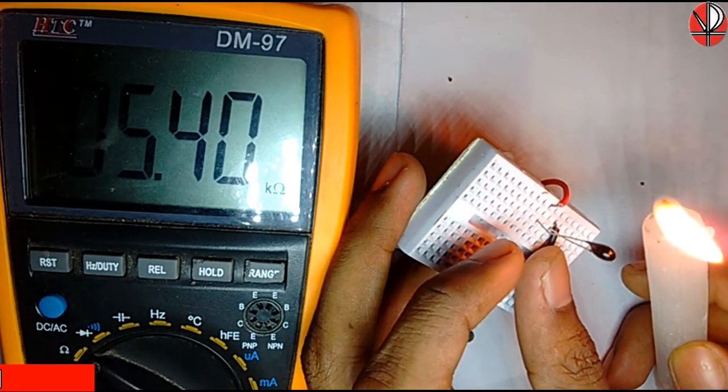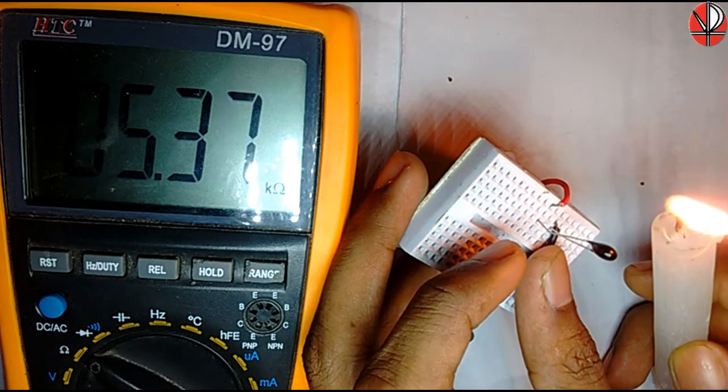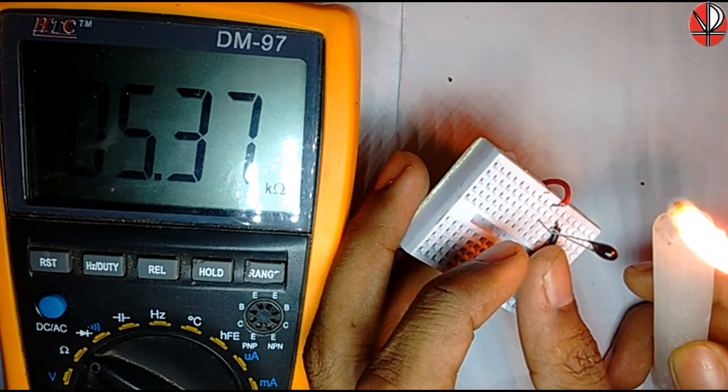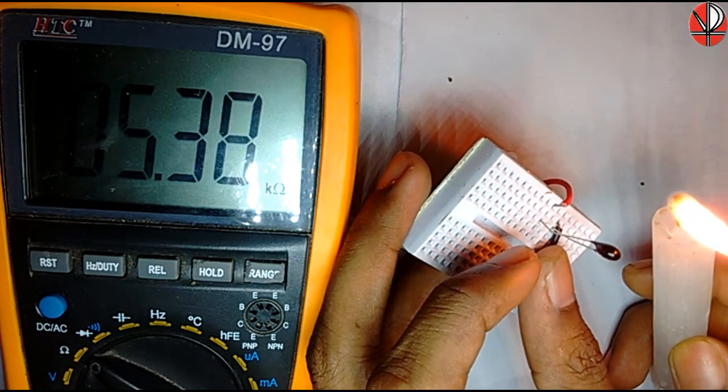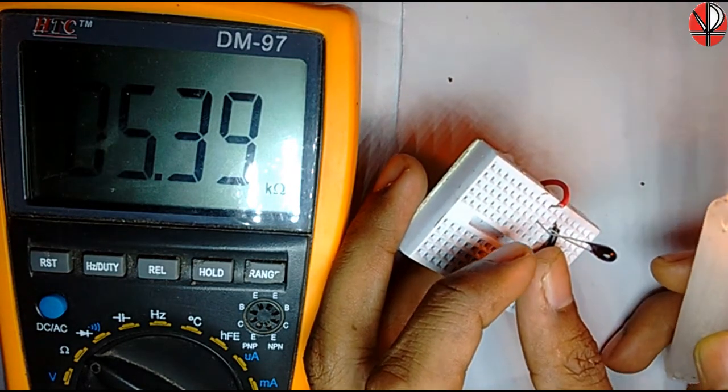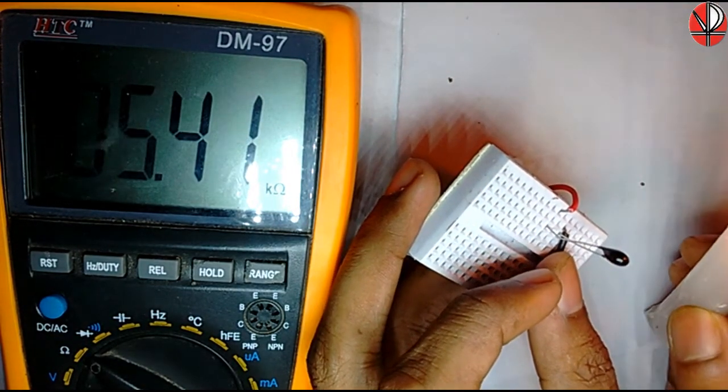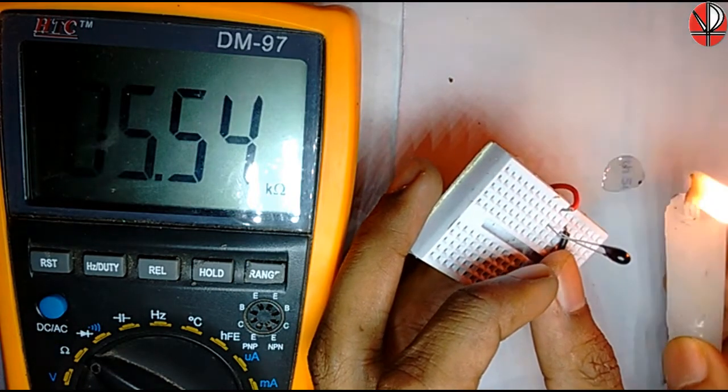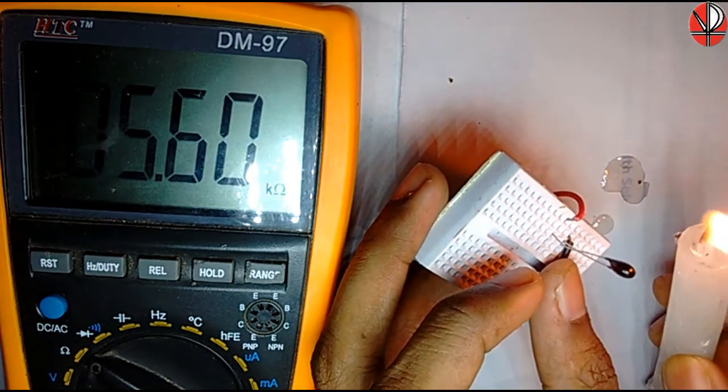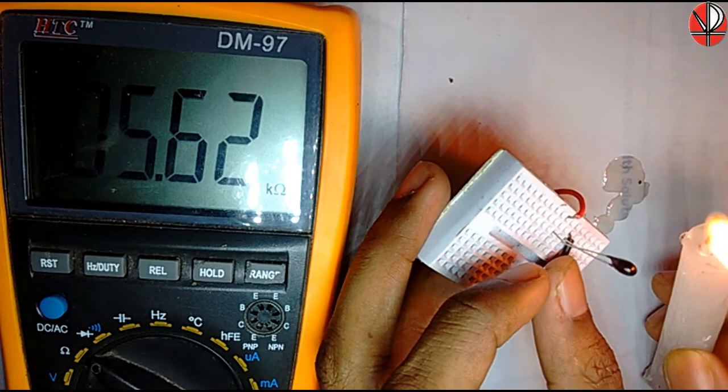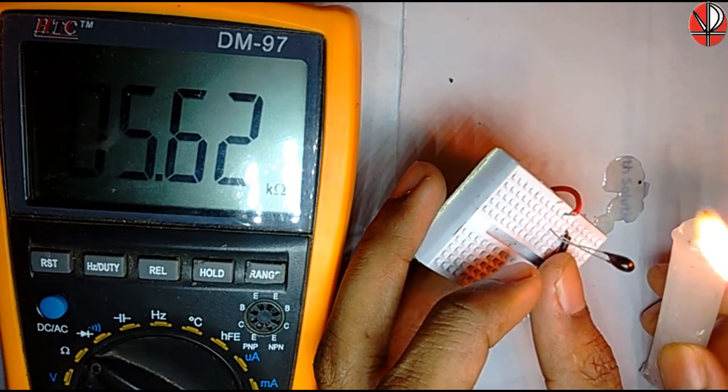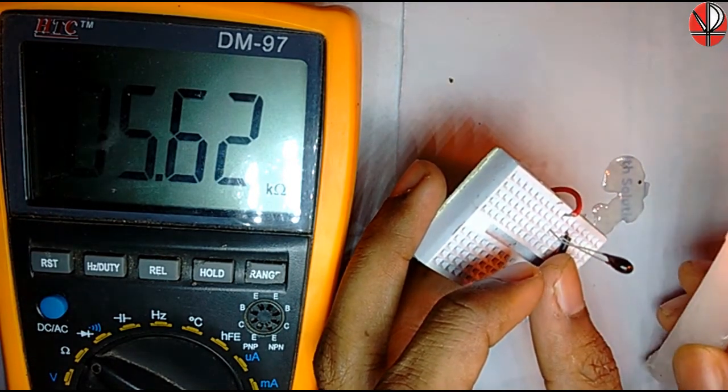That's why it is called negative temperature coefficient. That means with increasing temperature, its resistance goes down. For the PTC, positive temperature coefficient thermistor, its resistance goes up with increasing temperature. Thank you.